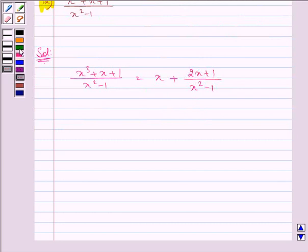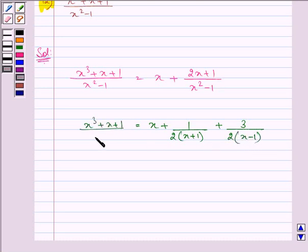So let us write it in place of the given function. We have the given function as x + 1 over 2(x + 1) + 3 over 2(x - 1). That is (x³ + x + 1)/(x² - 1).